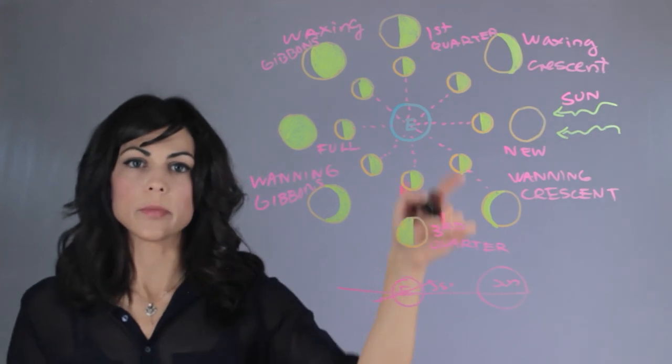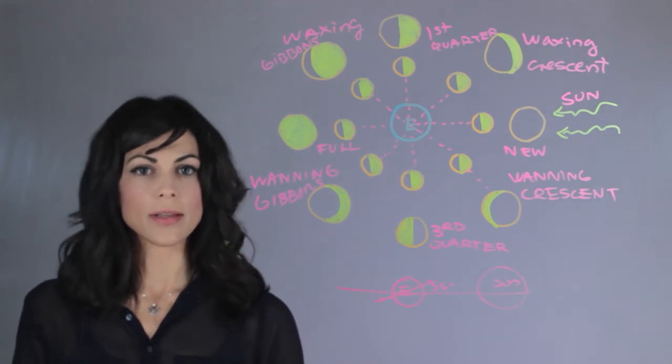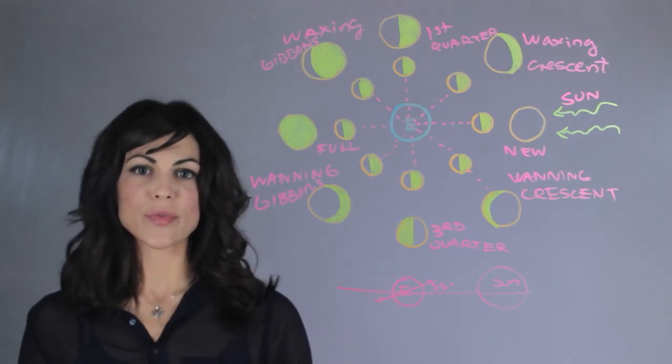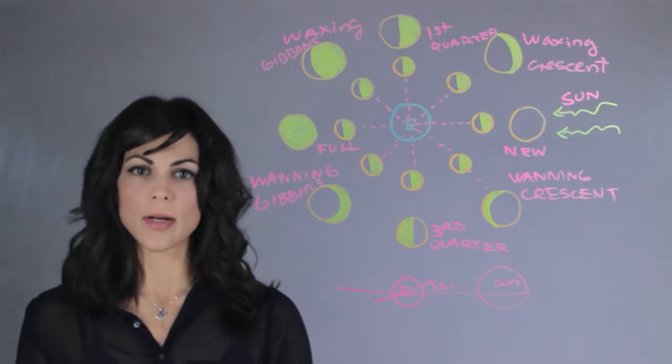And this is what's happening as the moon revolves around the earth. My name is Aileen Perez and I'm an astrophysicist and this is how the moon looks as it revolves around the earth.